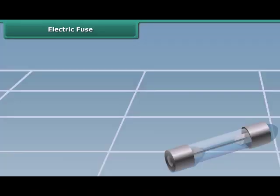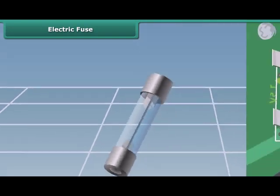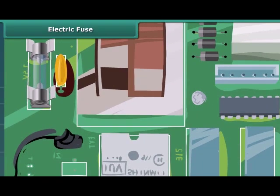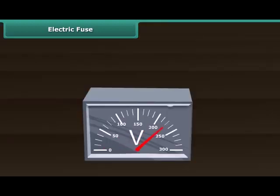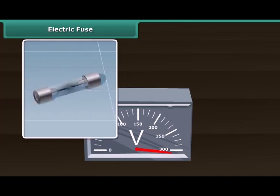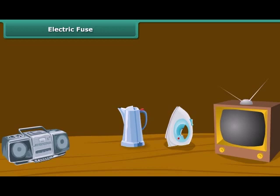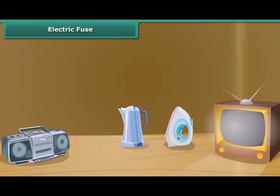A safety fuse is a device that protects an electric circuit. The heating effect of electricity is used in this case. When the current drawn is beyond a certain value, the fuse wire gets overheated, melts, and breaks the circuit. This prevents fire and damage to various electrical appliances.